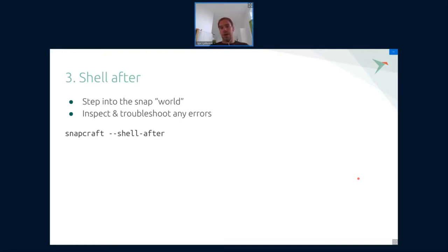Shell After. If you're developing a Snap and you want to see how it behaves after it's been built, you can use Shell After to step into the Snap build environment and see what happens there. This way you will have access to Snap environment variables, the build structure, and be able to inspect different bits and pieces. This can be quite useful if you're trying to troubleshoot an error that doesn't seem obvious from outside the build environment. Step into the build world, troubleshoot yourself, then step out and resume your normal development work.